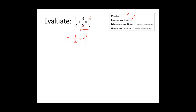Now we need to add. We are going to add one-half plus three-sevenths. When you add, you need a common denominator. The least common multiple of two and seven is fourteen, so we need to write these fractions with fourteen as the denominator.